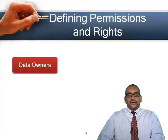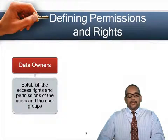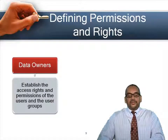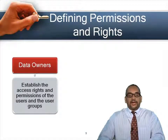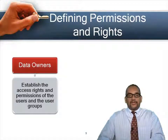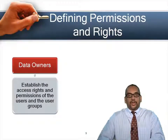When defining permissions and rights, we have to consider the data owners — the people who own the actual information. We need to establish the rights and permissions of users and groups. As the owner of the data, I can restrict access and say a particular group has full control, another group has no access, and another can only read it.